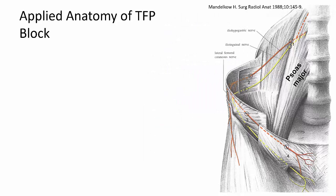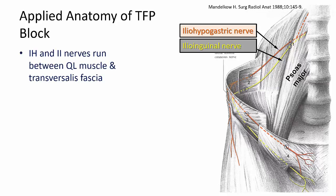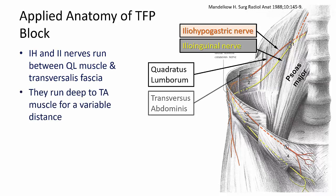The ilioinguinal and iliohypogastric nerves emerge from the lateral border of psoas major, run inferior to the 12th rib, and course over the anterior surface of quadratus lumborum. Lateral to quadratus lumborum, they initially run deep to transversus abdominis for a variable distance before piercing transversus abdominis to enter the TAP plane between internal oblique and transversus abdominis.